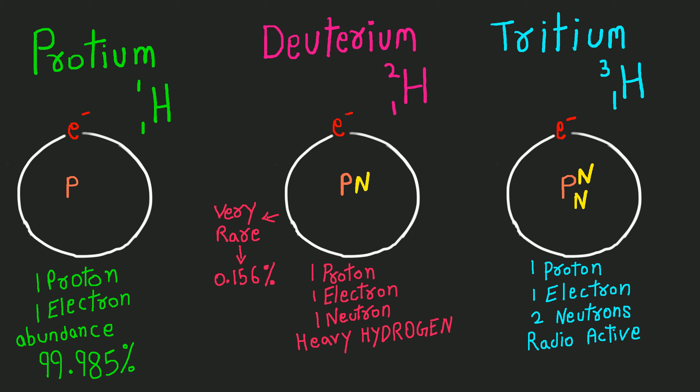Protium is the most abundant element on Earth at 99.985%. Deuterium is the heaviest element, which is rare at 0.156%, and tritium is a radioactive element formed in the upper atmosphere by nuclear reactions induced by cosmic radiation.